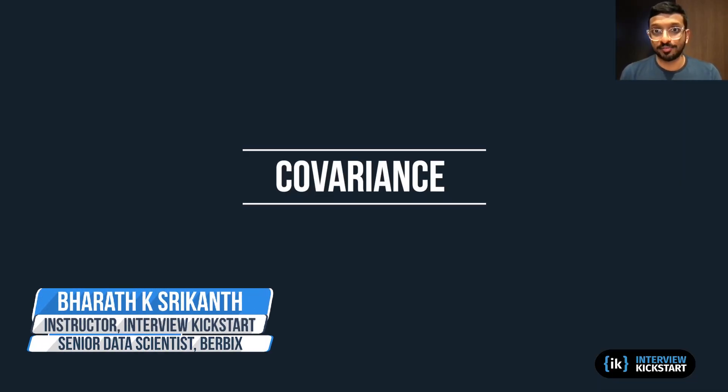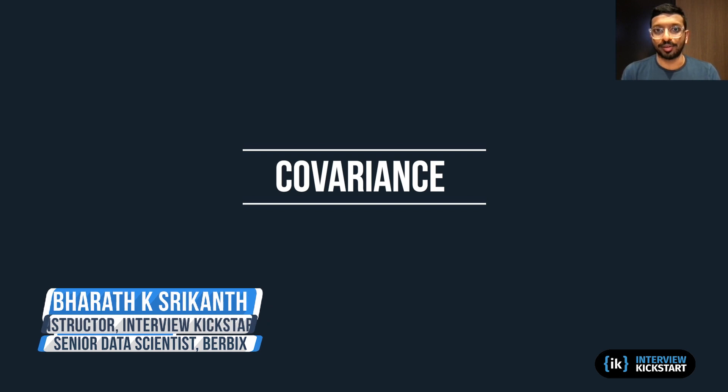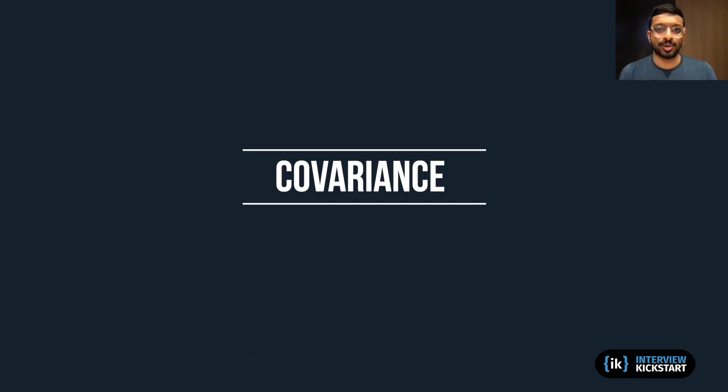Hi, everyone. In this first video, we're going to talk about covariance. Covariance is a quantity that gives us some information about the relationship that two different variables have with each other. In this video, we're going to talk about exactly what covariance is and how to calculate it.